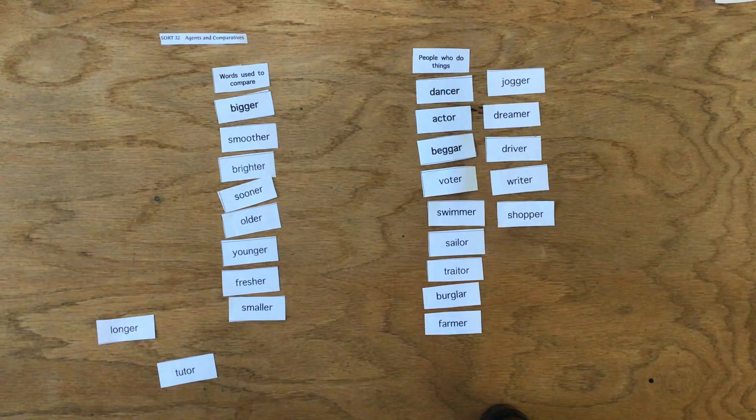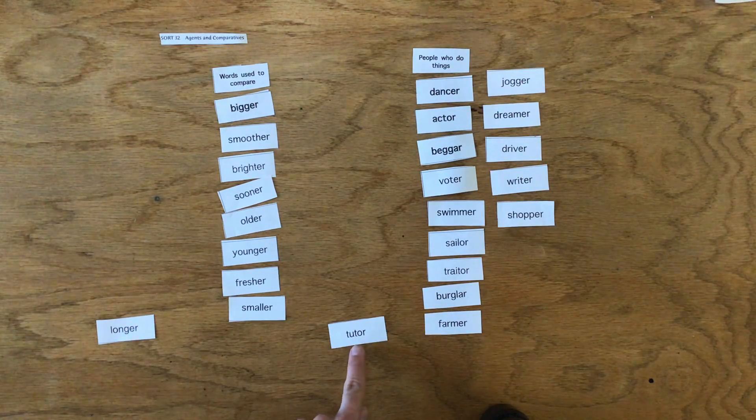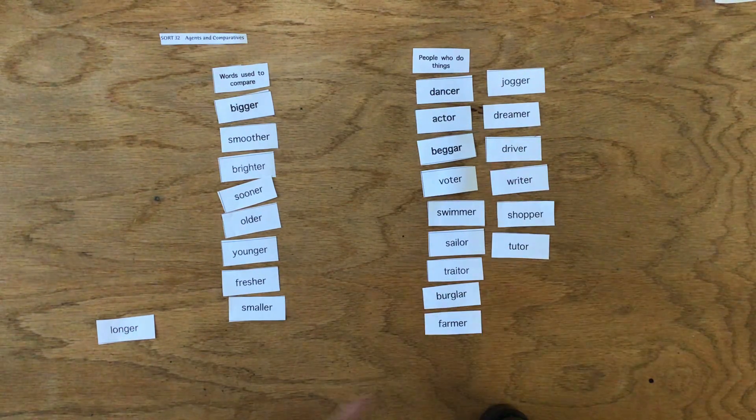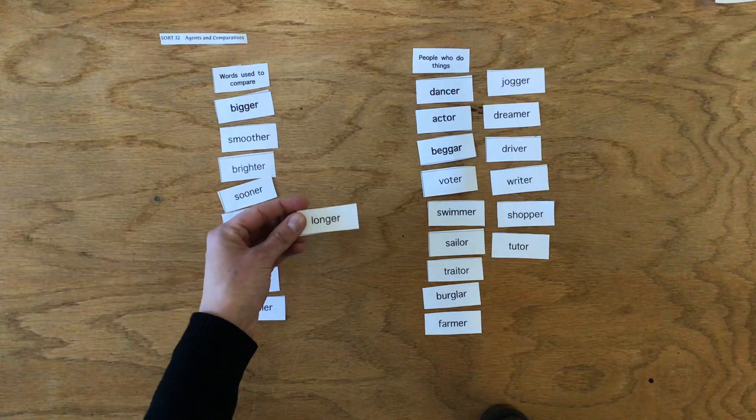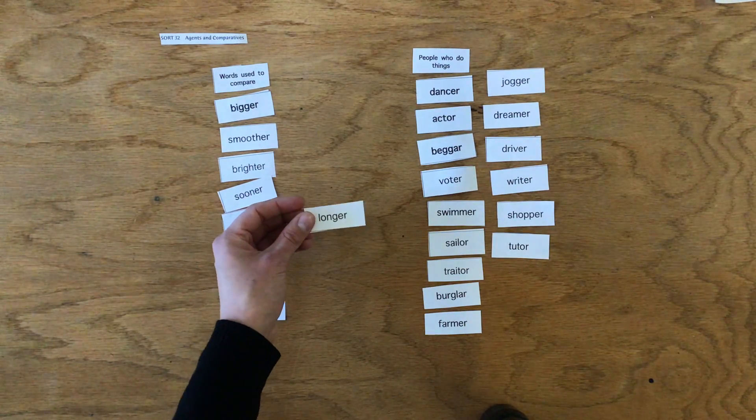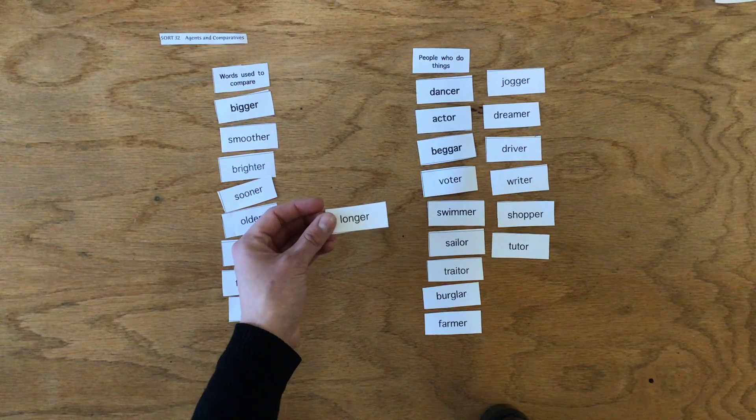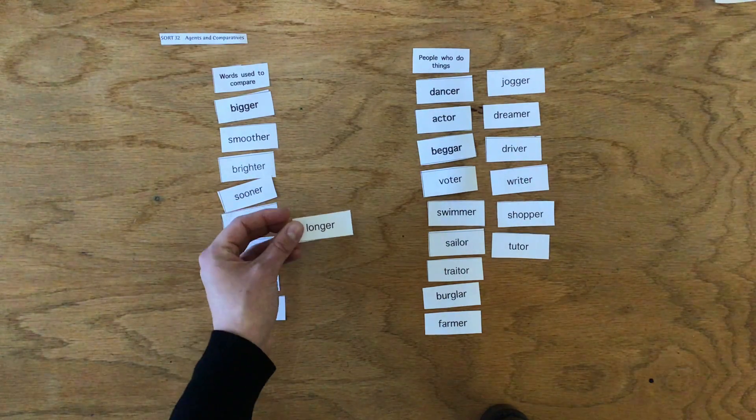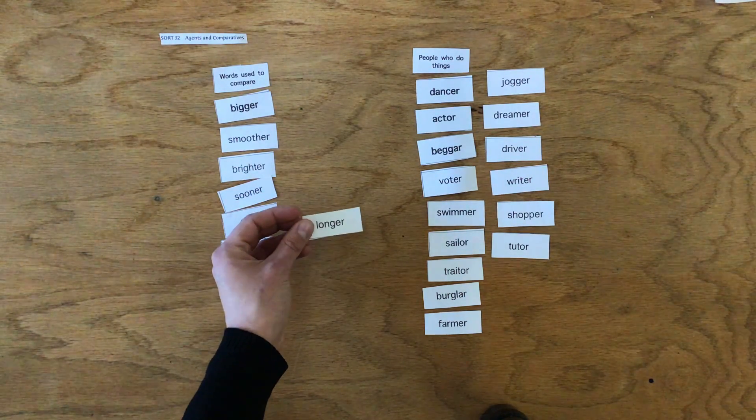Shopper is somebody who shops. Tutor is somebody who teaches. And longer is a comparative adjective. Like, my hair is longer than his. So it's comparing my hair and his hair.